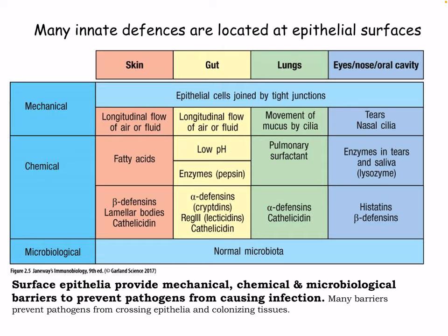Our defenses at each level break down into mechanical, chemical, and microbiological. Mechanical defenses include epithelial cells joined by tight junctions, airflow and fluid, movement of cilia in the lungs (the ciliary escalator), and tears and nasal cilia in the eyes and nose. Chemical defenses include fatty acids on the skin, beta-defensins, low pH in the stomach, enzymes like pepsin, alpha-defensins, cryptidins, REG3, and cathelicidin.